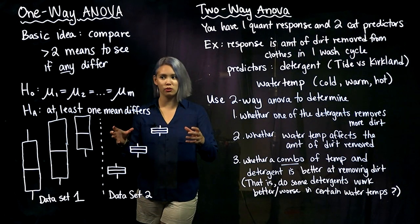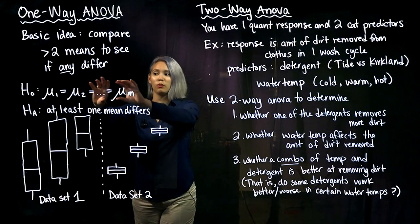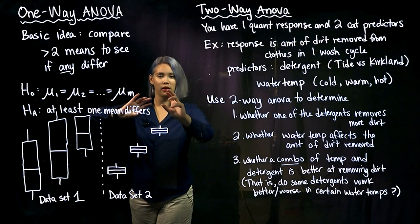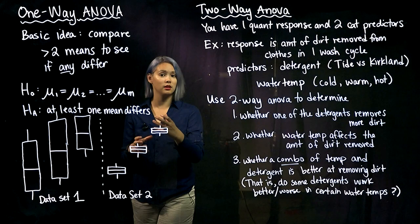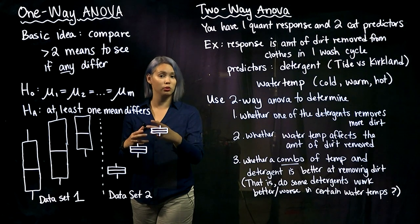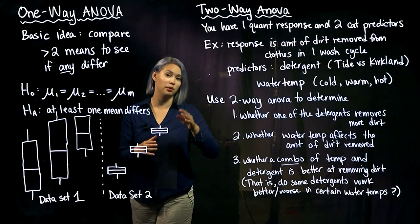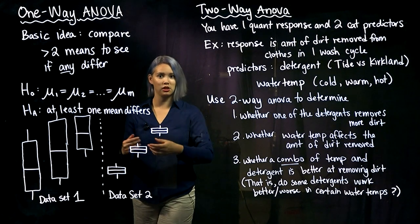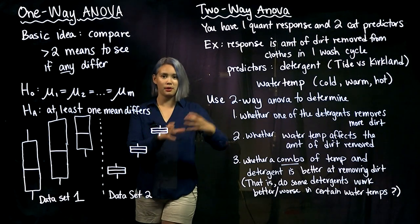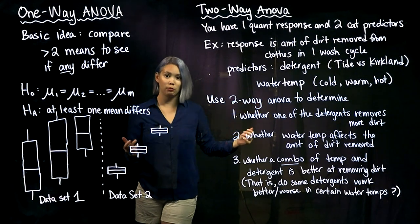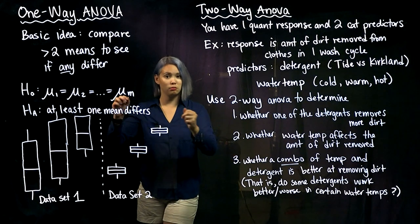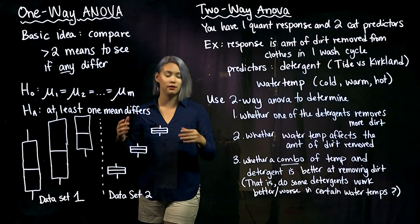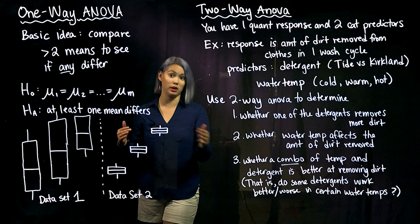To do this test, we're going to compare the variability within each group against the variability between different groups. So if we have m populations, we'll take a sample from each of those m populations, and then we're going to make a plot to visually see the variability within each group and the variability between groups.